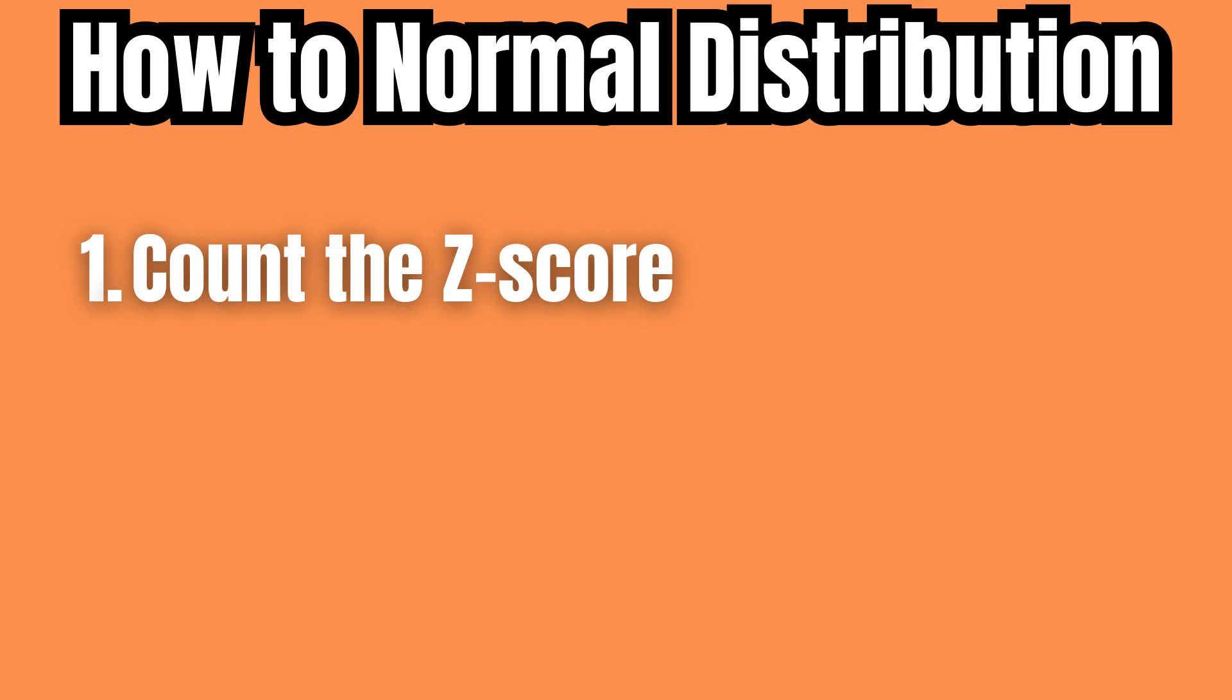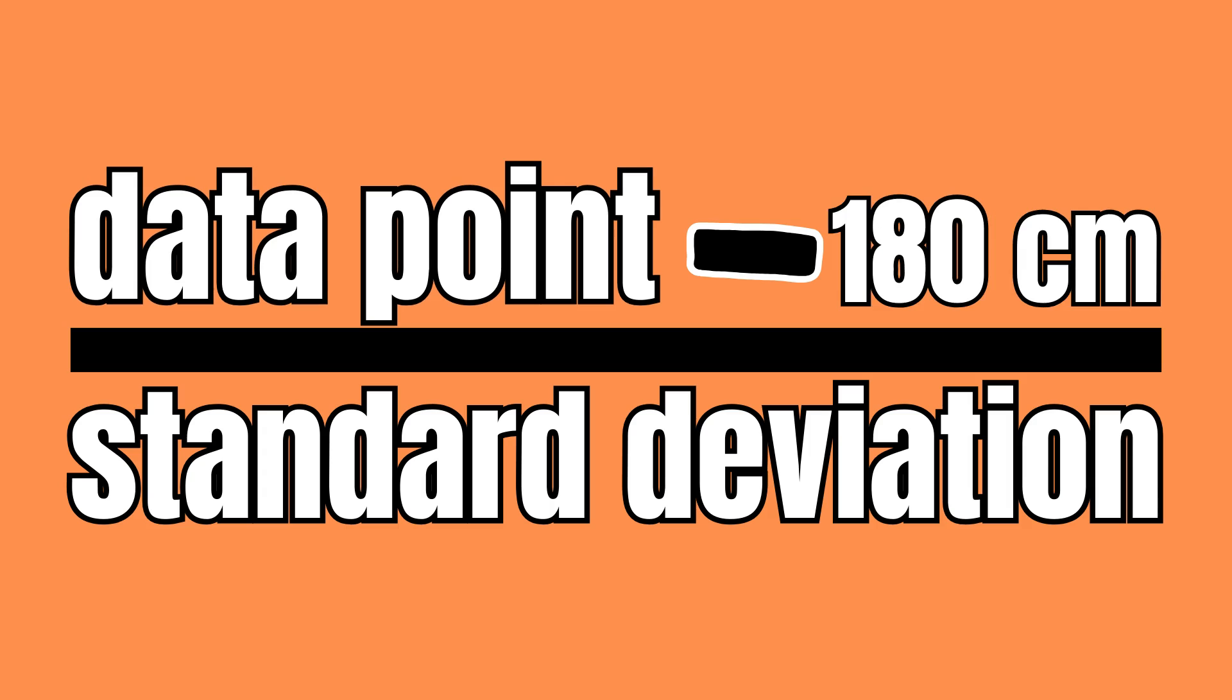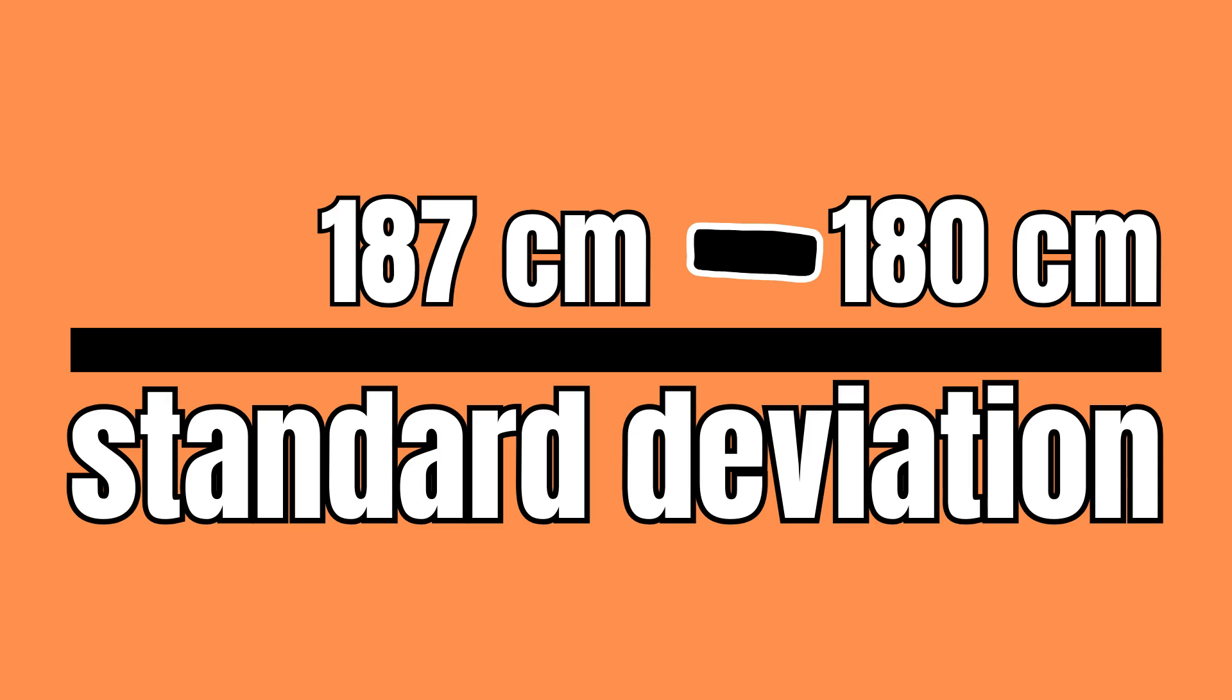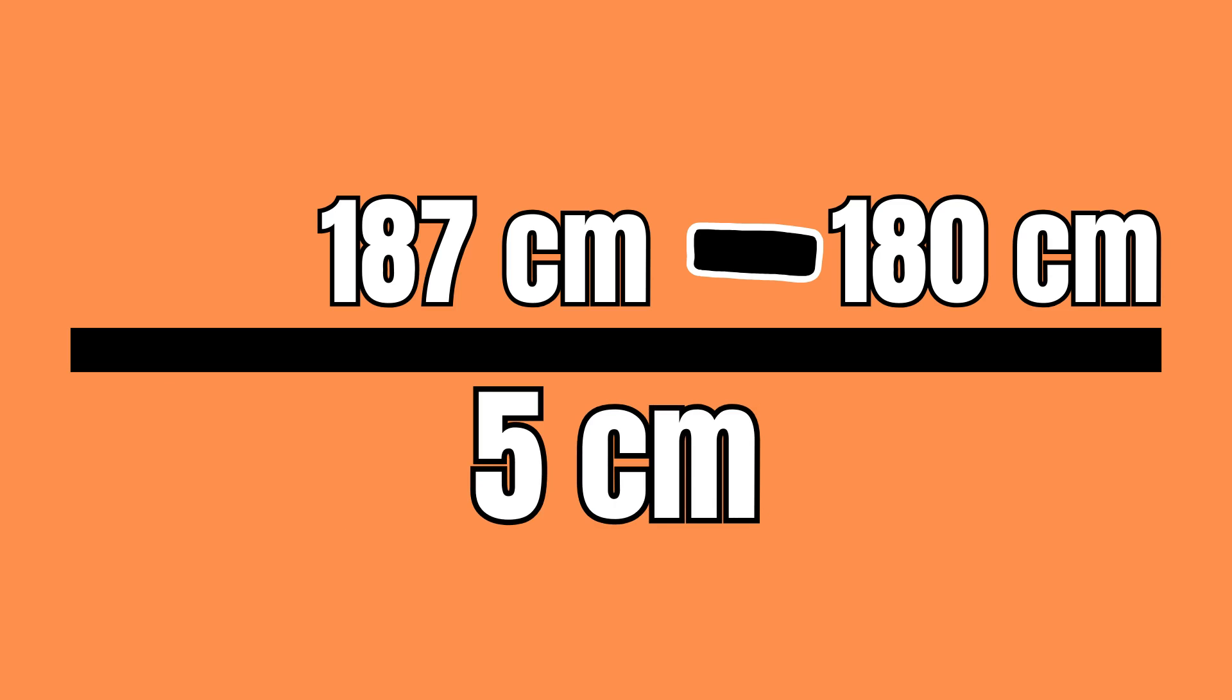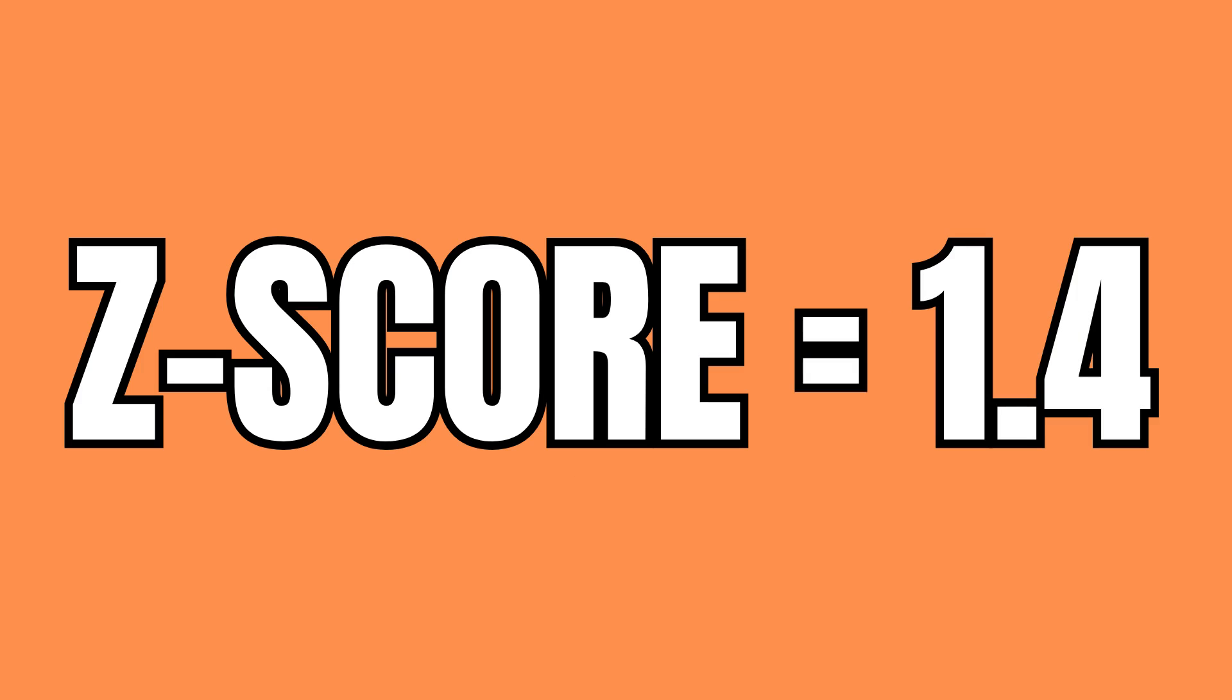I'll start by calculating my own z-score by subtracting the mean height of 180 centimeters from my own height of 187 centimeters and dividing the result by the standard deviation of 5 centimeters. This would mean that the z-score for my height would be 1.4.